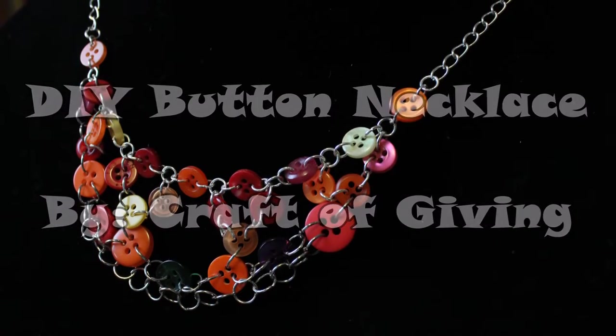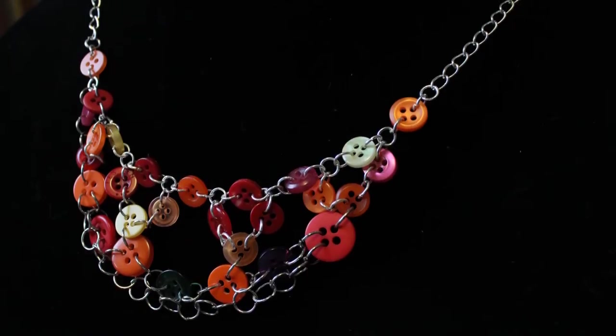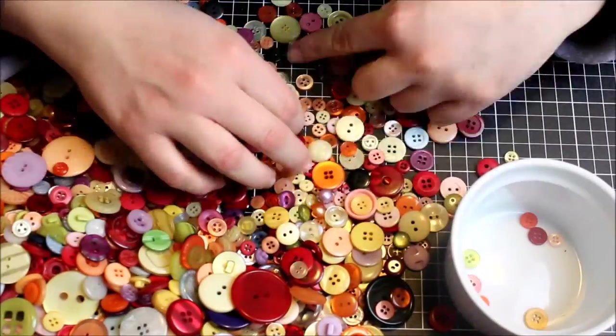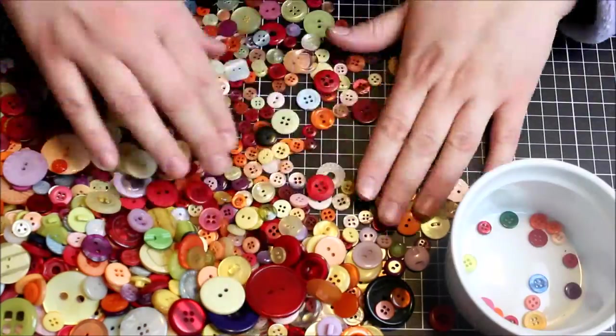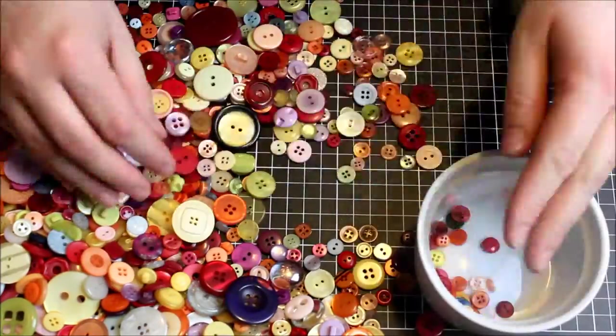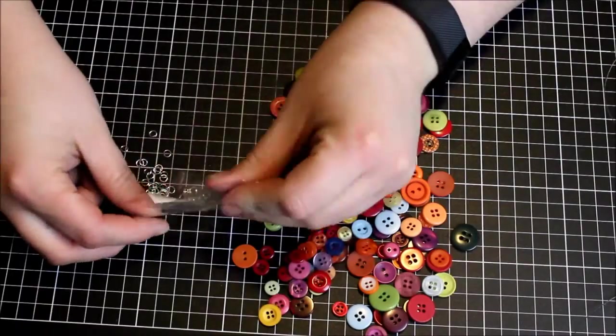So to make your button necklace you'll need of course your buttons. Now I have a really large jar filled with buttons that I'm just sorting to collect all the small ones and all the pretty ones. Now you can stick to a color theme if you wish. I am not fussy so I'm just making mine a nice little rainbow colored one.